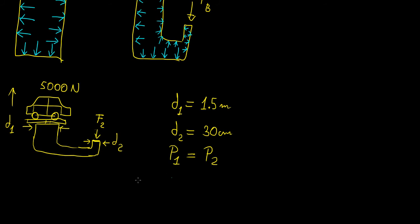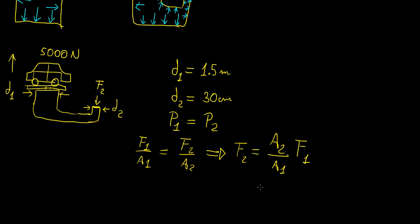Now pressure is just force over area, so we're going to have force 1 over area 1. This is going to be force 2 over area 2, which means that if we want to calculate the force required at this end, we're going to have to use the ratio of the two areas times F1.